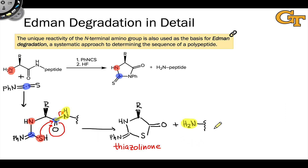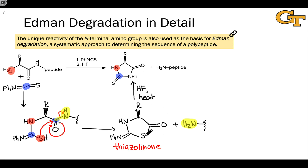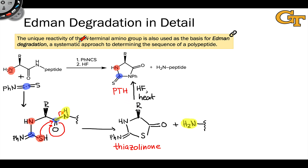Now we have our new N-terminus and we're ready to repeat the Edman degradation again to identify the next residue. The thiazolanone is isomeric with the final heterocycle seen on the product side, and ultimately what happens to generate this final heterocycle is an isomerization process mediated by HF and heat. This essentially involves opening of the ring and use of nitrogen as a nucleophile toward the carbonyl carbon to re-close the ring. This resulting heterocycle is known as a phenylthiohydantoin — a hydantoin with sulfur replacing oxygen and a phenyl group linked to nitrogen — or PTH for short.